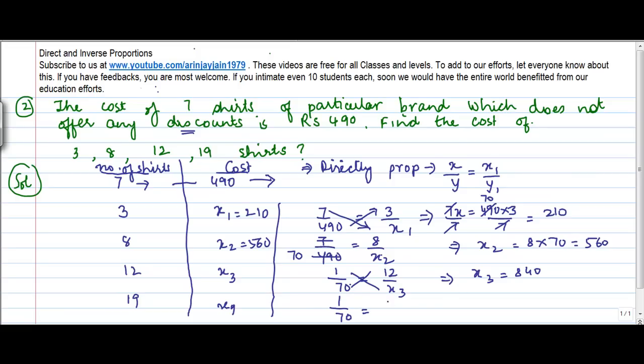Again, 1 by 70 is equal to 19 upon x4. Cross multiplying, 1 into x4 is equal to 19 into 70, or x4 is equal to 1330.